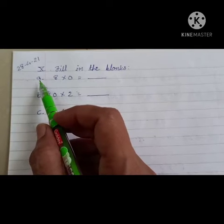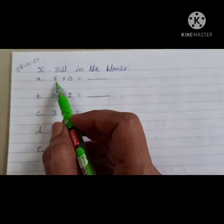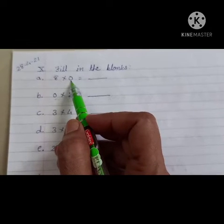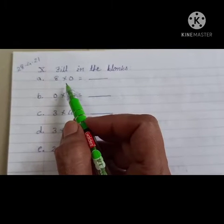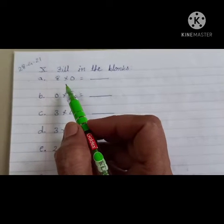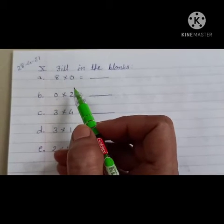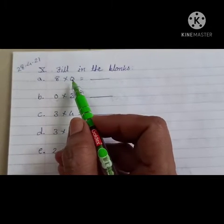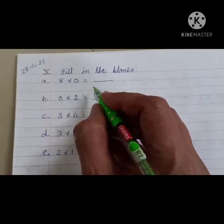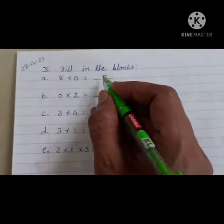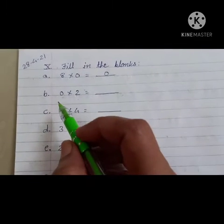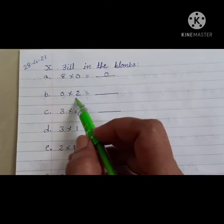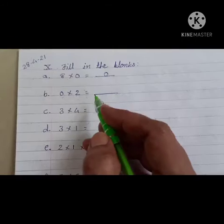First, A, 8 multiply 0. Children, you all of you remember that किसी भी नंबर को 0 से मल्टिप्लाइ करते है, तो आंसर 0 ही आता है. That means, 8 multiply 0 is equal to 0. Next, B, same as it is, 0 multiply 2 is equal to 0.